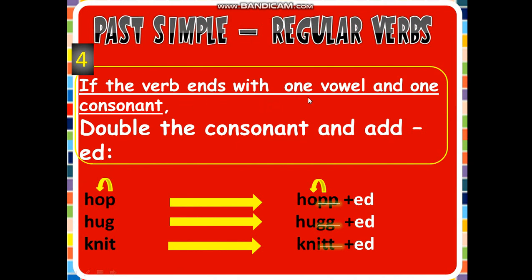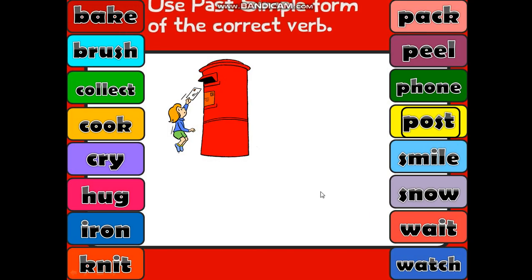The fourth rule: if the verb ends with one vowel and one consonant, we double the consonant. Hop — one vowel, one consonant. Hug — one vowel, one consonant. Knit — one vowel, one consonant at the end. So we double the consonant: double the 'p', double the 'g', double the 't', and then add 'ed' at the end of the verb.